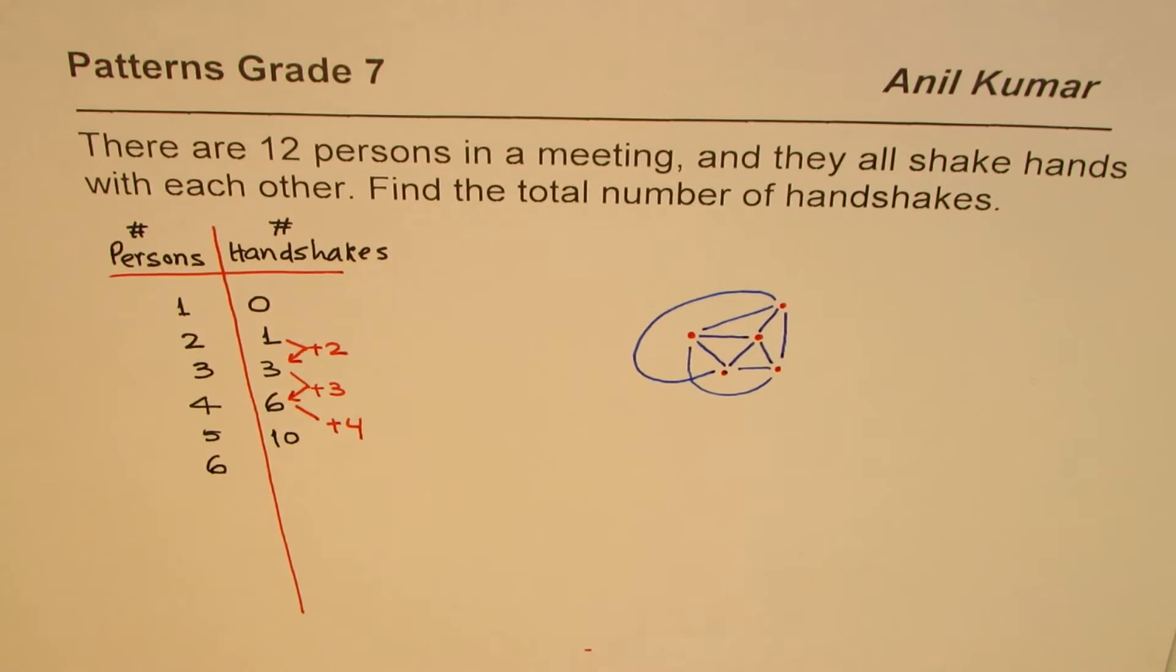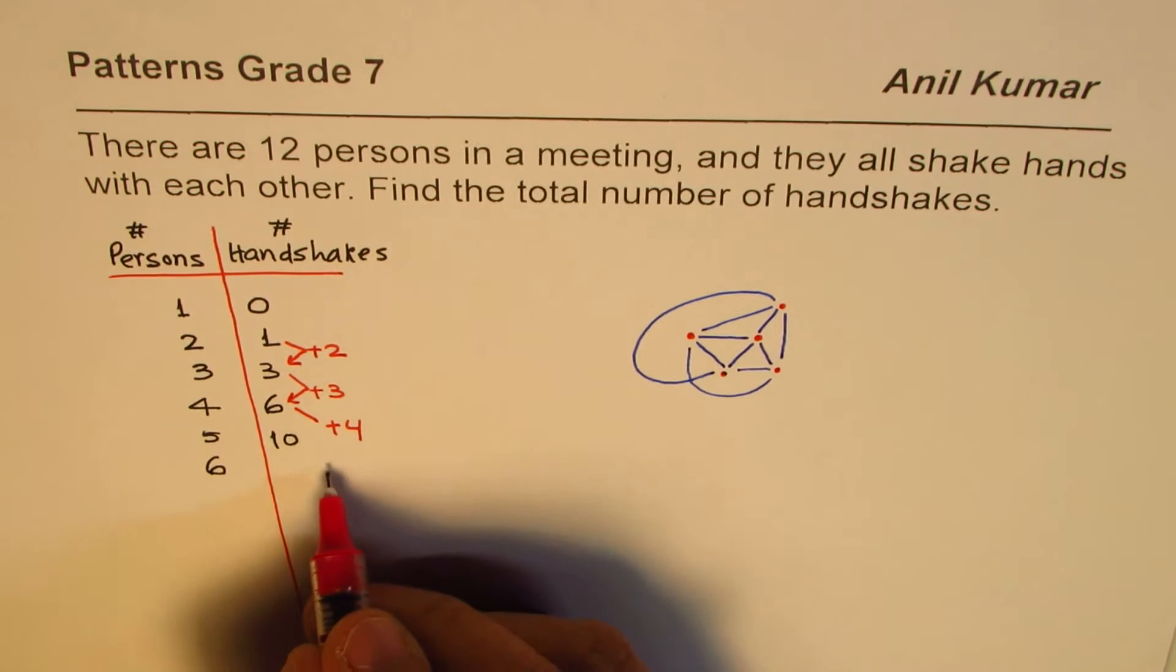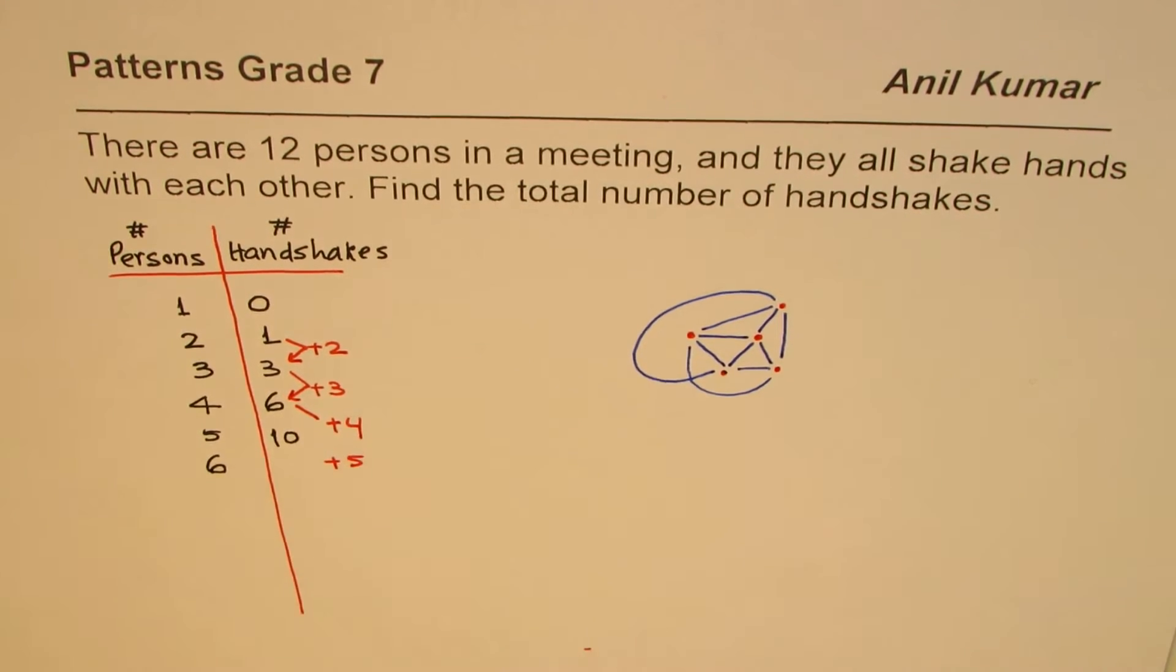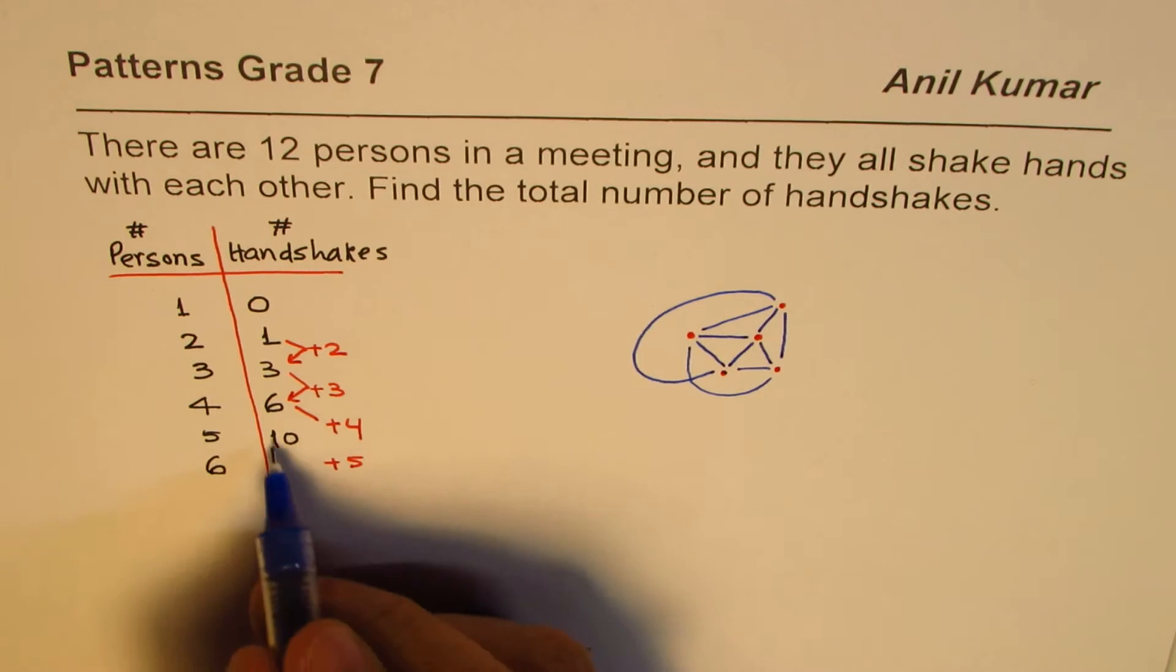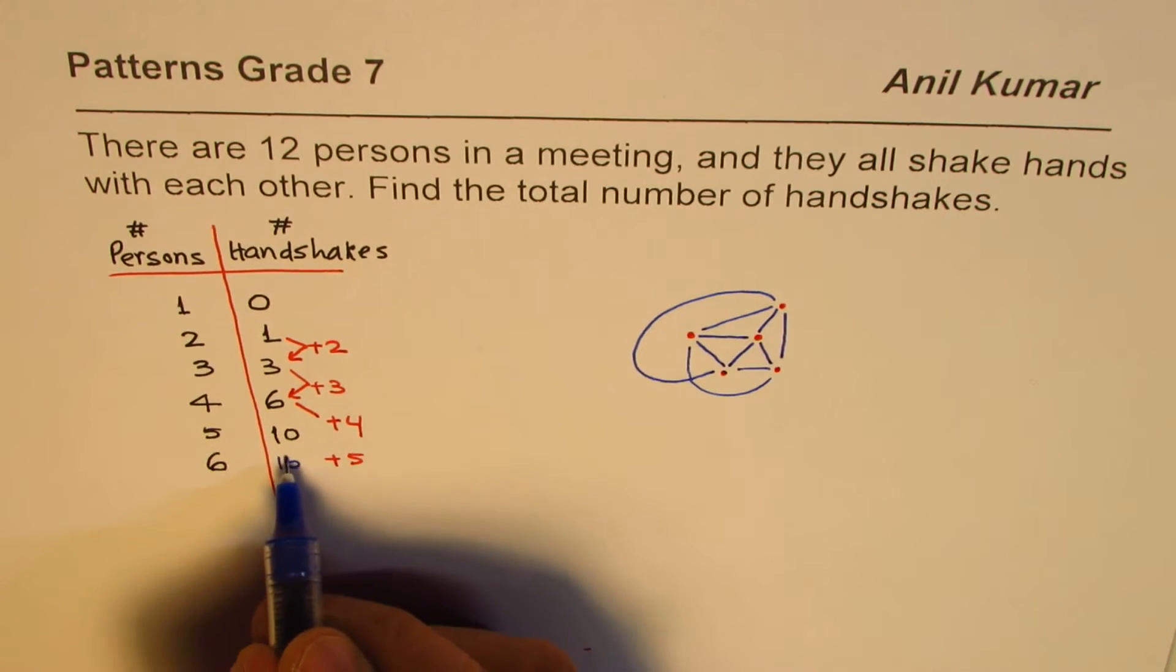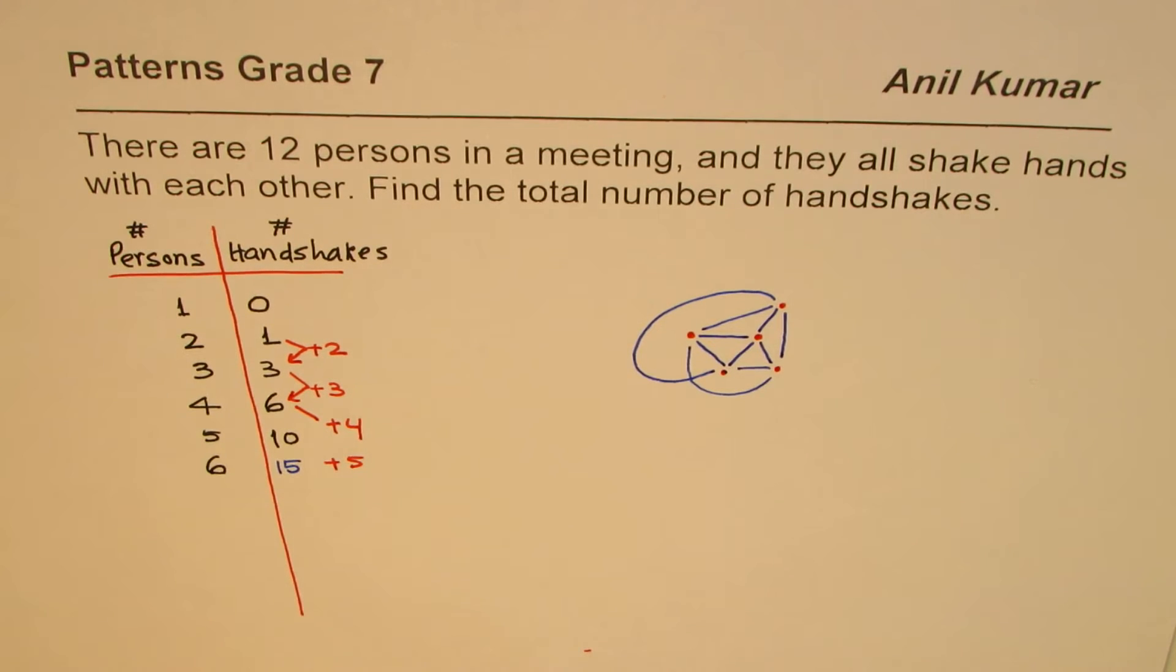For the sixth person, it means 5 more handshakes. Now I need not sketch and show you, but I can go with this table. Five more handshakes - 10 plus 5 is 15.